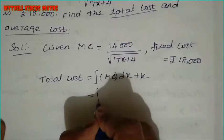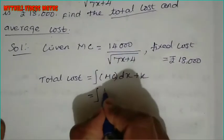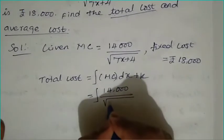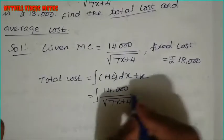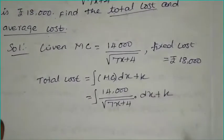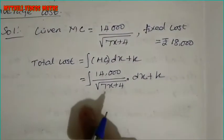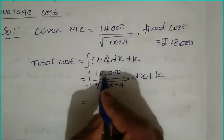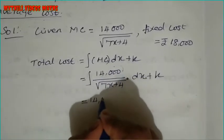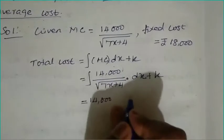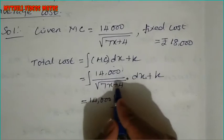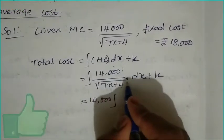So total cost equals the integration of marginal cost, that is 14,000 divided by root of 7x plus 4, into dx plus constant k. Now we integrate this term.